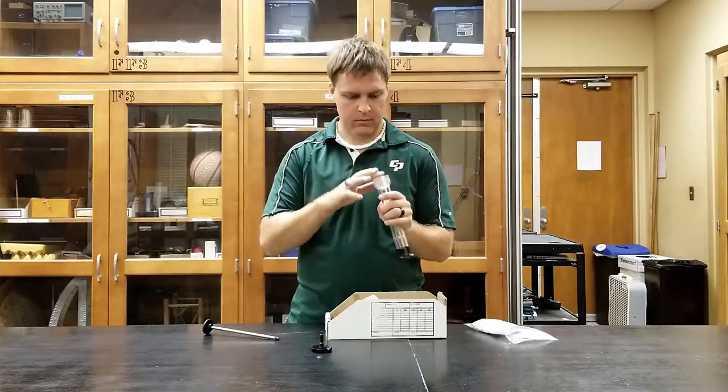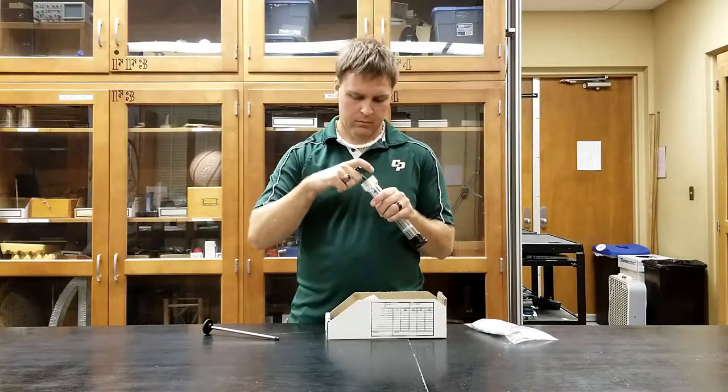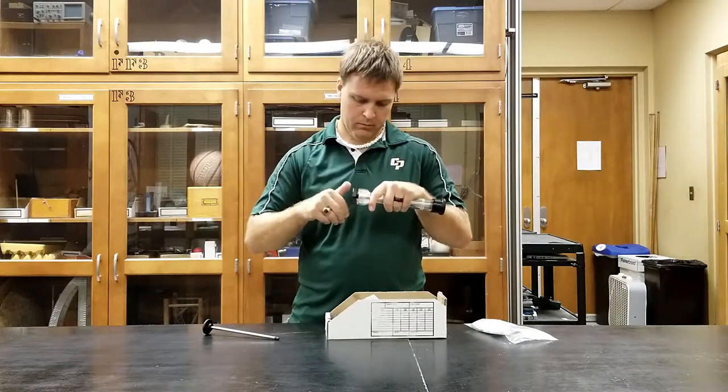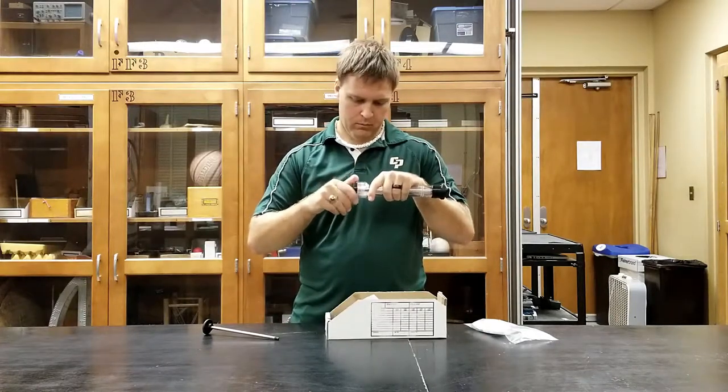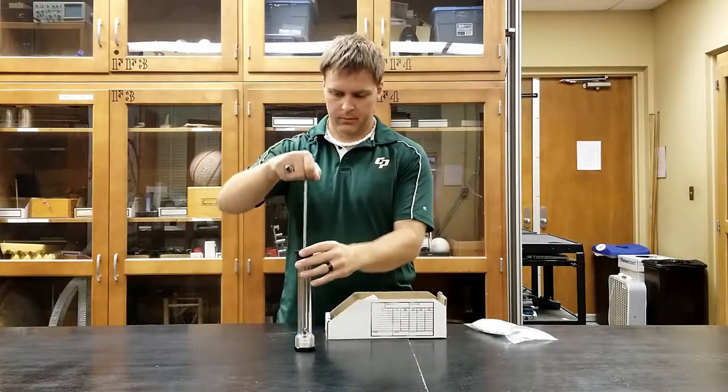Screw the bottom on, making sure that it doesn't catch the cotton and just pushes the cotton upwards. Once everything is set, push the plunger in just a little bit to clear the space.